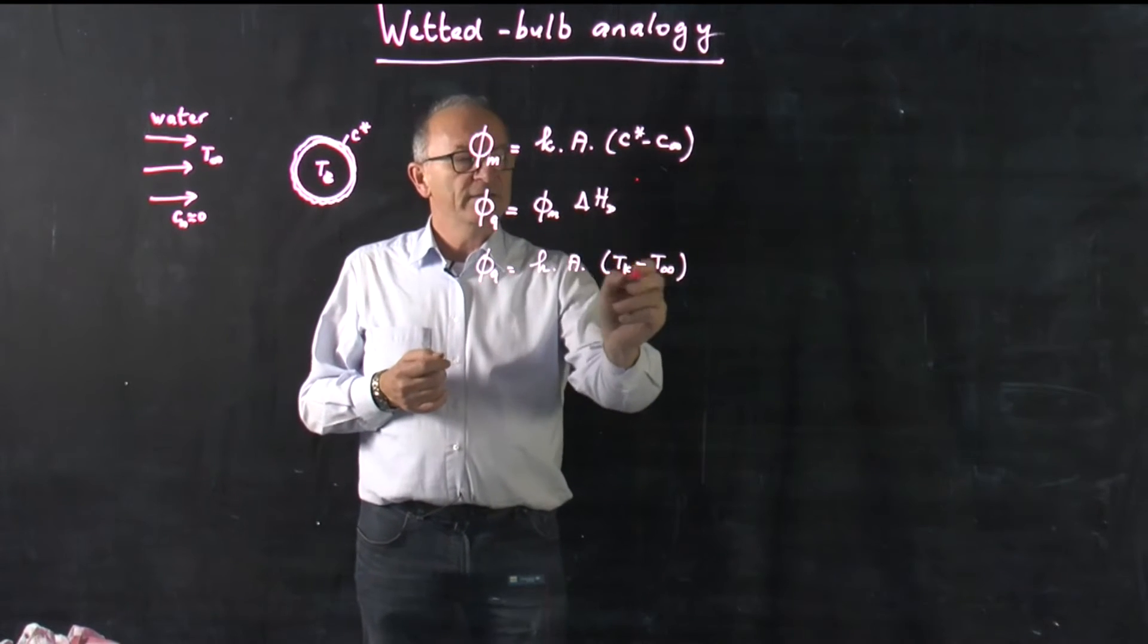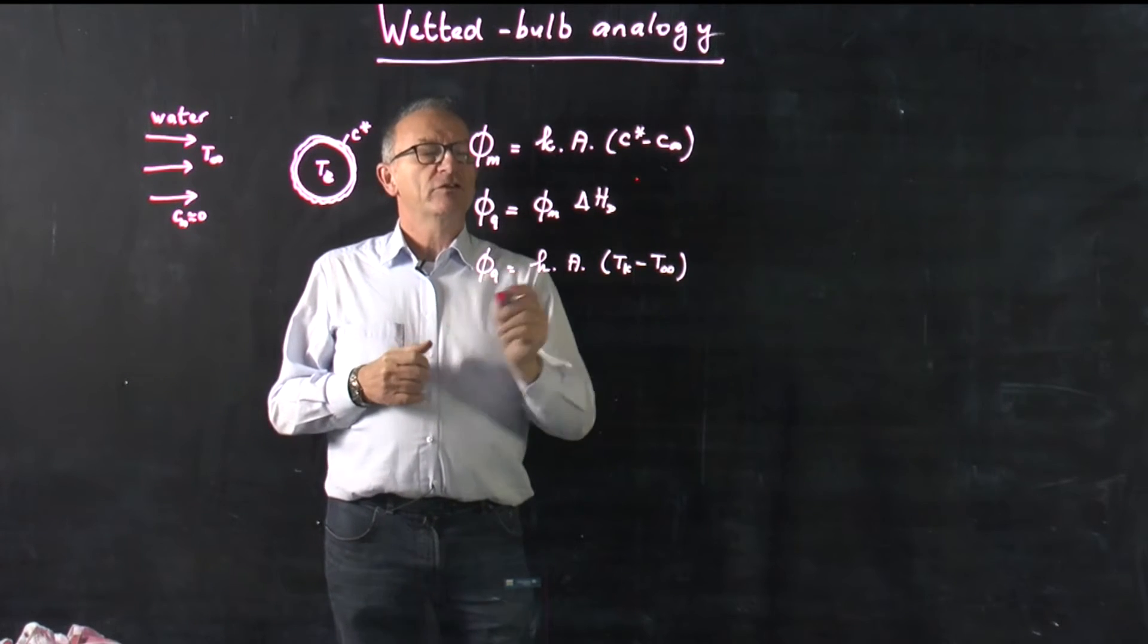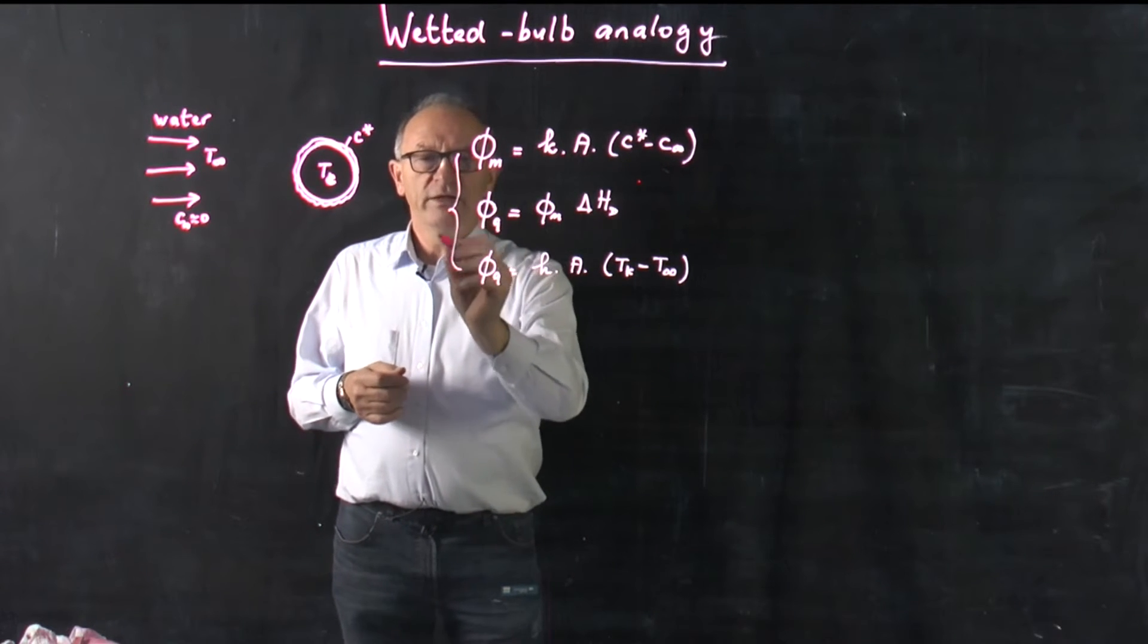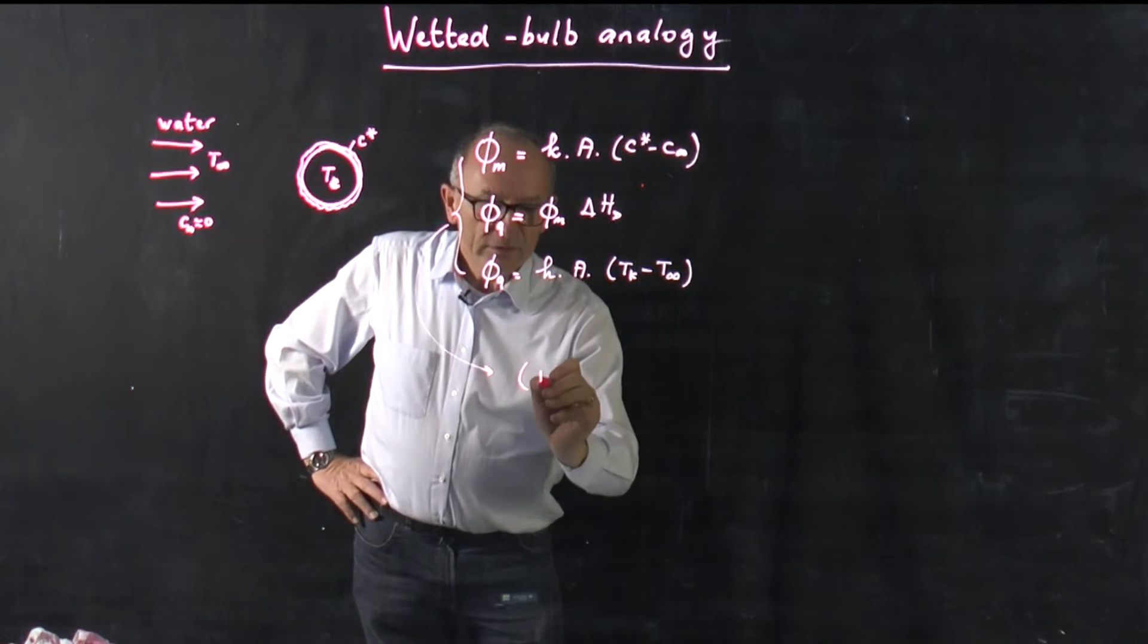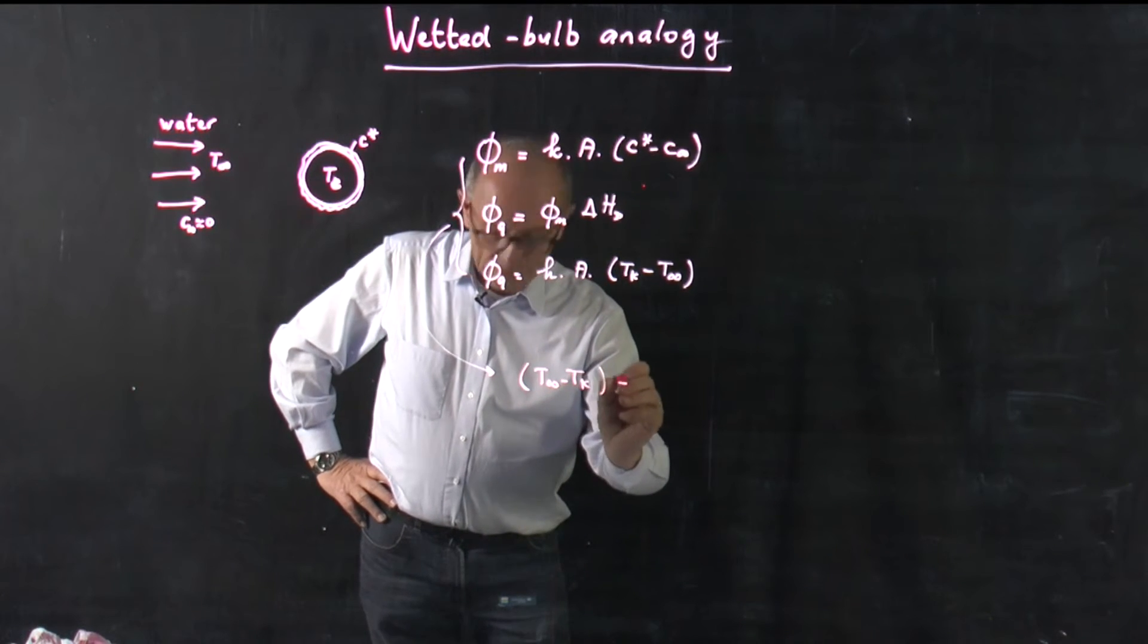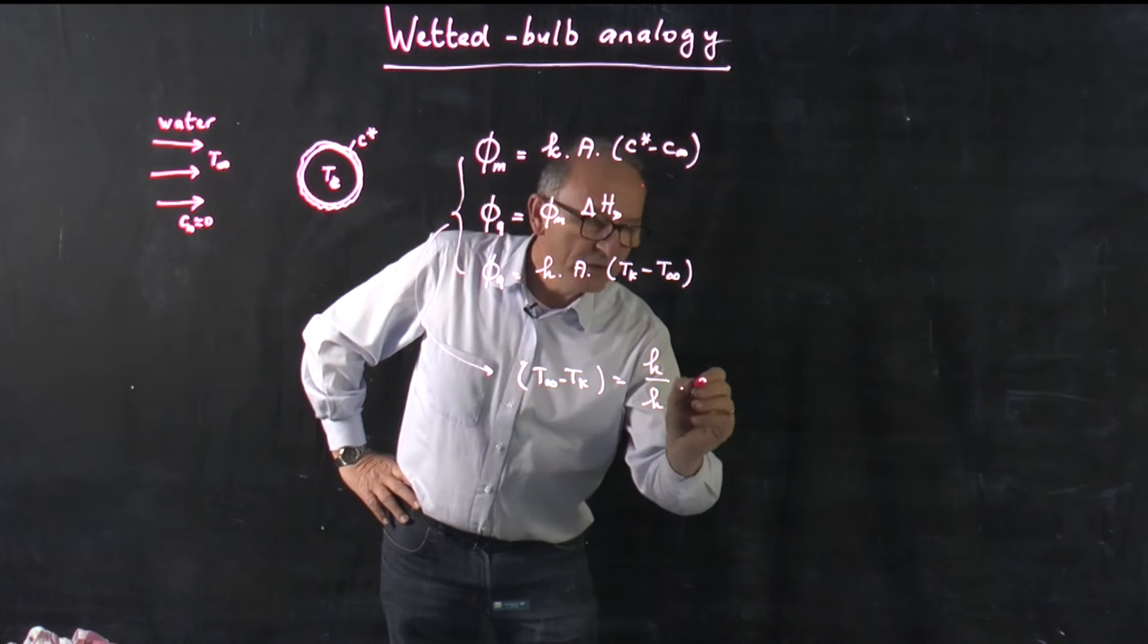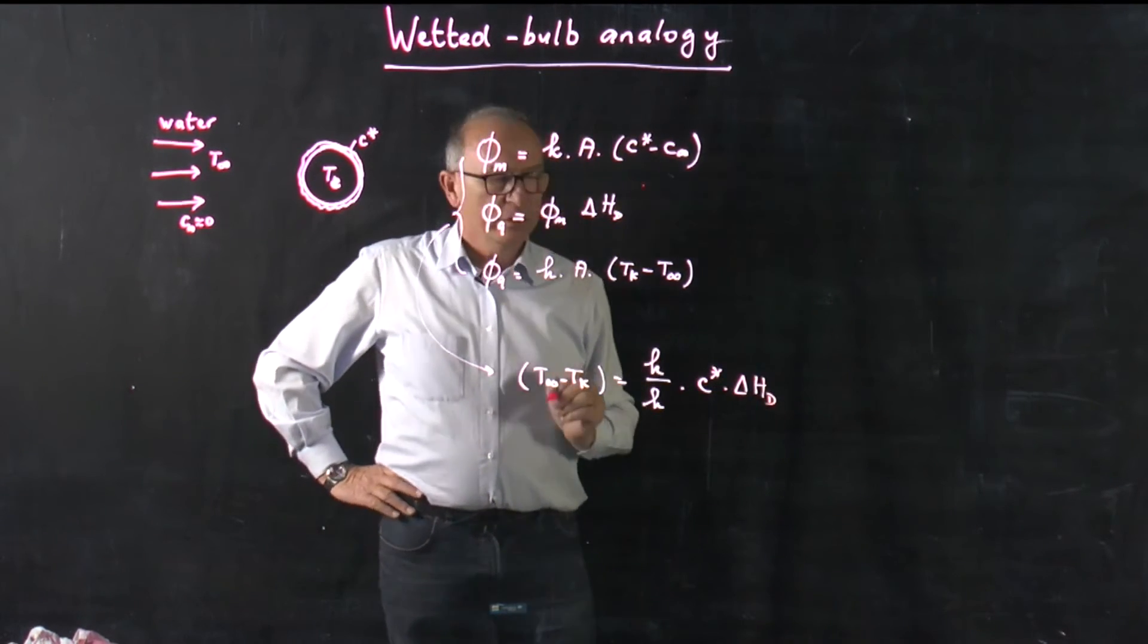In this case you could wonder which is the largest one of the two, and it strongly depends if this heat is supplied or heat is needed. But if you combine this, you could also derive equations like T infinity minus Tk is equal to H over K multiplied by C star multiplied by the enthalpy which you need to dissolve the crystal.